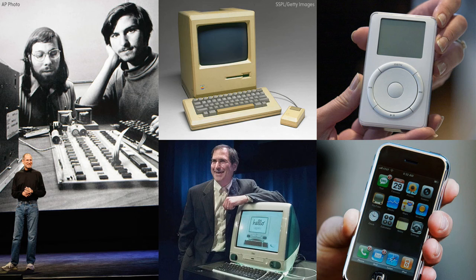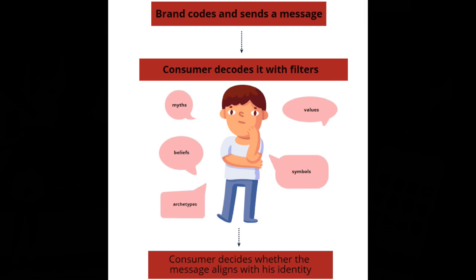A brand releases its brand codes and sends a message to the consumer. The consumer then decodes it with filters. Those filters can be myths, values, beliefs, symbols, or archetypes. After decoding, the consumer decides whether the message aligns with their identity.